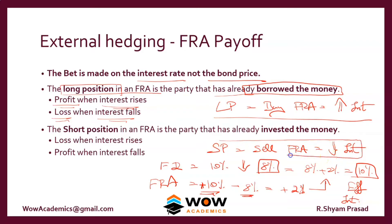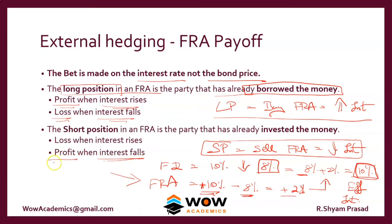The short position is used by an investor who feels the interest rate is going to go down. They sell an FRA at a higher interest rate of 10% and buy at a lower rate, making a 2% profit. The actual FD deposit earns the market rate of 8%, and together with the 2% FRA profit, the investor receives 10% total interest income. In the short position, if interest falls the company profits; if interest rises, the company makes a loss.